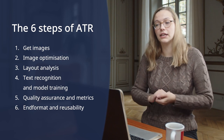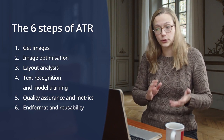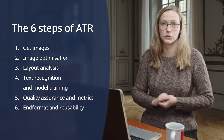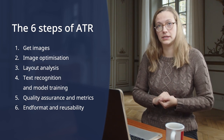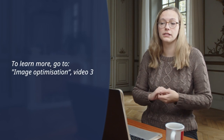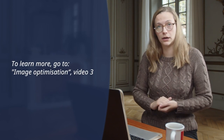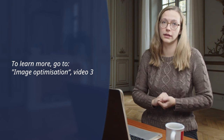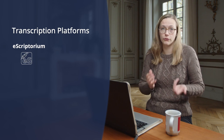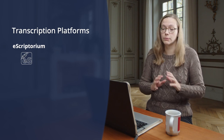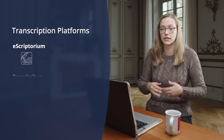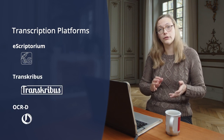You start by preparing the scanned images of your sources. The first step is to get images of the text you want to transcribe. The second step is image optimization. To find out more about the required image quality and preparation prior to uploading, please refer to the video on this subject. When your images are ready, you upload them onto a transcription platform. In these videos, we use the French platform Escriptorium. However, the process is the same when using other platforms, such as Transkribus or OCRD.